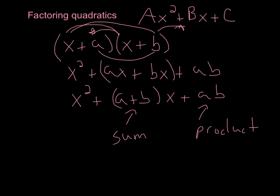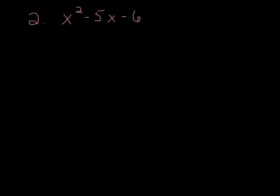Let's go ahead and take a look at our first example: x² − 5x − 6. Going back through what we just talked about, these two values are going to be my sum, and this last term is going to be my product.